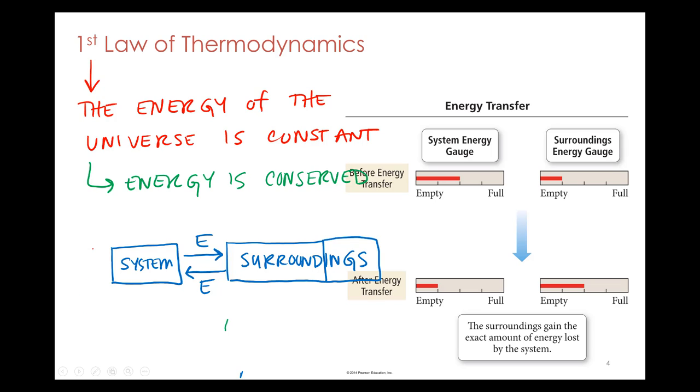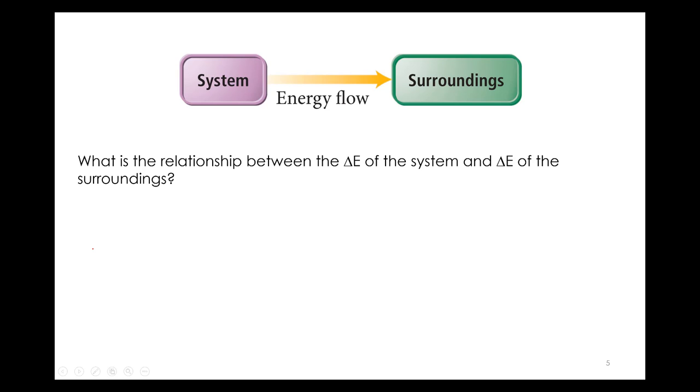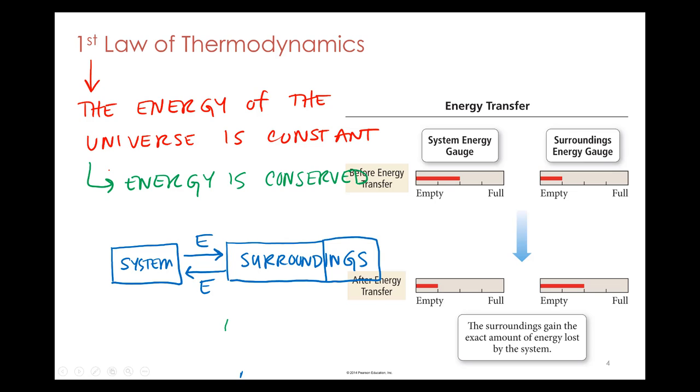So let's think about that in terms of the relationship between those two. Let's calculate the change in energy of the system and the surroundings. To do that, we're going to have to put some numbers on this. Let's say a half a tank is 50 joules. Let's say the quarter tank is 25 joules. So the system went from 50 to 25.